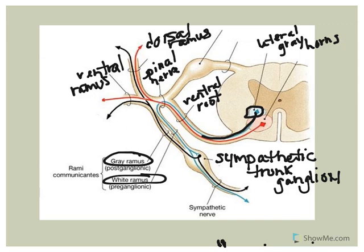We can use the white versus gray matter analogy for naming these rami communicantes. The white ramus communicans has lightly myelinated axons - white matter had myelinated axons. Gray matter is the location of cell bodies or unmyelinated axons. So the axons of post-ganglionic neurons of the sympathetic nervous system are not myelinated and travel along the gray ramus communicans.